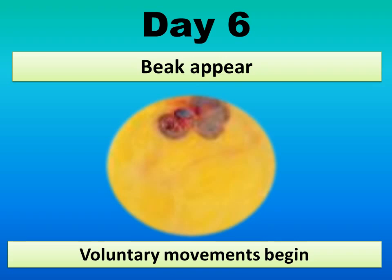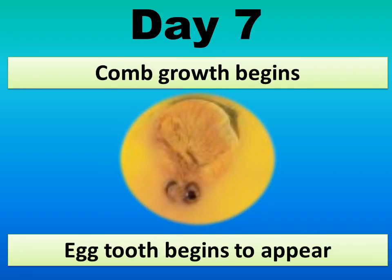On day seven, comb growth begins and the nictitating membrane begins to appear. Day seven is termed as the first day of candling.